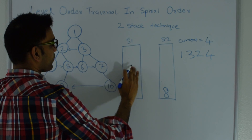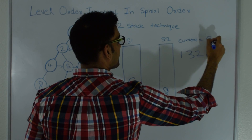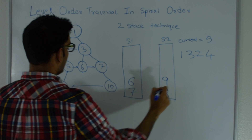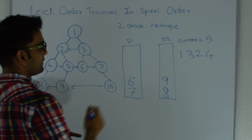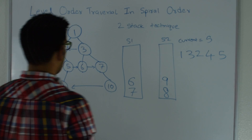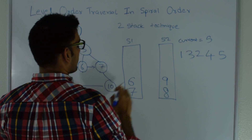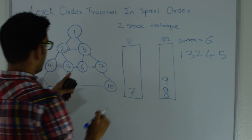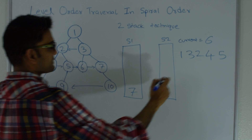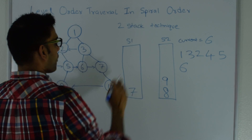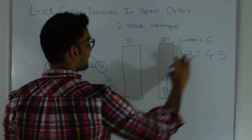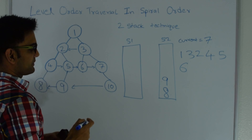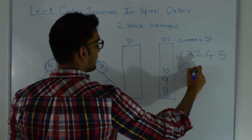I pop again from stack 1 — current becomes 5. 5 has a left child so that goes into stack 2; 5 doesn't have a right child, so I print 5. Then current becomes 6: 6 does not have left or right child, so I just print 6. Then current becomes 7: 7 does not have a left child, but I put its right child into stack 2, and print 7.